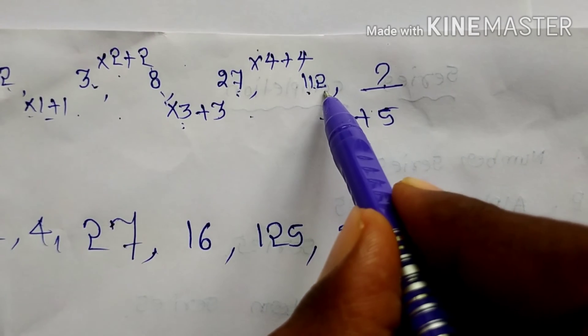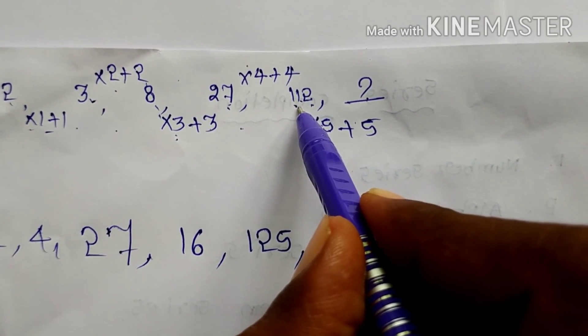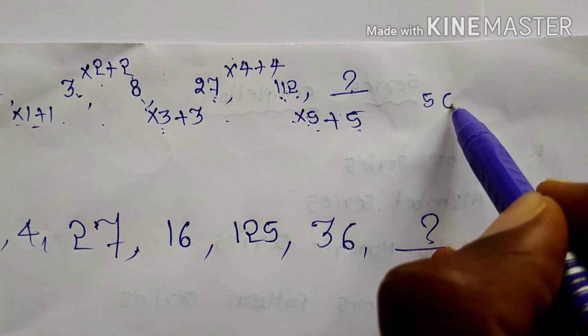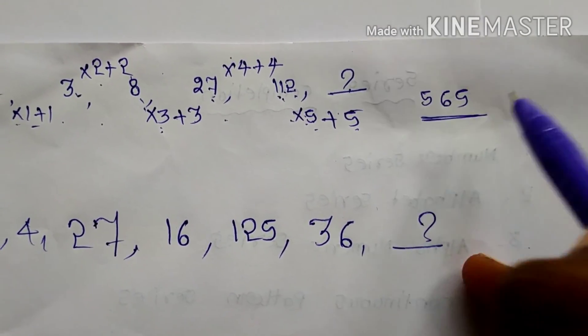You will get here 560 plus 5. 565 is your answer. 565 only your answer. Very, very easy.